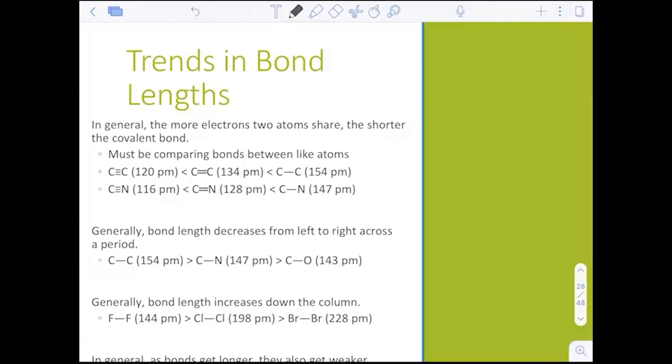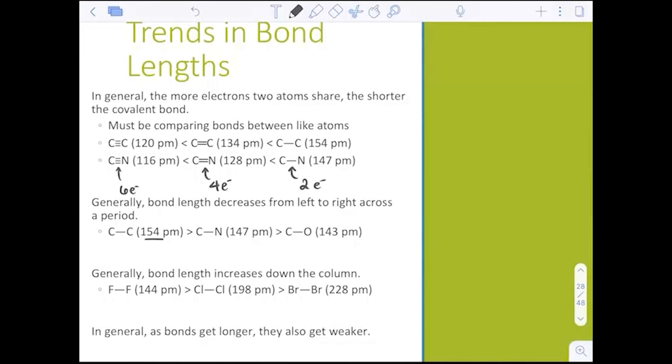Here's some trends in bond length. Again, what we see, triple bonds are shorter than doubles. Doubles are shorter than singles. And that's because of the increased attraction with six electrons for our triple bond versus our four electrons for a double versus just the two electrons in that attraction for a single bond. Generally bond length decreases from left to right across the periodic table. As we go from left to right on the periodic table, atom size decreases. And as we go down a column, atom size increases. So the bond length increases. And in general, as the bonds get longer, they also get weaker, meaning their bond energy decreases. Doesn't cost as much to break them.